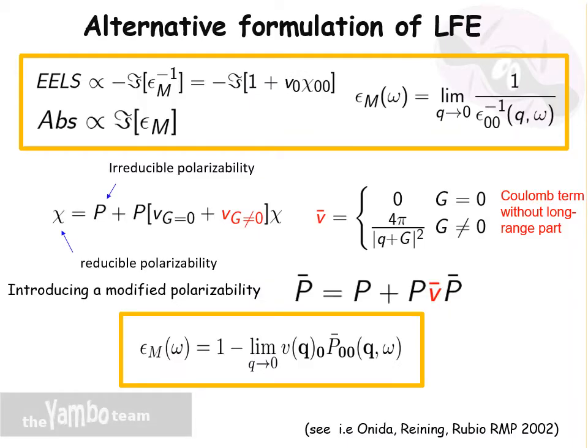Before moving further, let me point out that there is an alternative way to include local field effects. Instead of using the normal Dyson equation that connects P to χ, we can introduce a Dyson equation for a modified polarizability called P-bar, where the Coulomb terms enter in the equation without the long-range component G=0. In this way, it can be shown that the macroscopic dielectric function can be obtained directly from this expression without the need to pass through the inversion of the matrix.